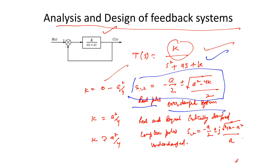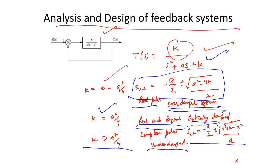As the value of K increases, the poles move along the real axis and the system remains overdamped. When K equals a²/4, both poles are real and equal — the imaginary part vanishes — and the system is critically damped. For gain above a²/4, the system is underdamped and the poles become complex.